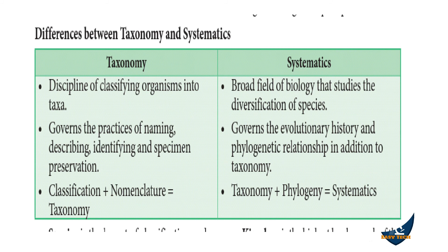Taxonomy is the discipline of classifying organisms into taxa, and it governs the practice of naming, describing, identifying, and specimen preservation. Systematics is the broader field of biology that studies the diversification of species, governing evolutionary history and phylogenetic relationships in addition to taxonomy. In summary: Taxonomy = Classification + Nomenclature; Systematics = Taxonomy + Phylogeny.